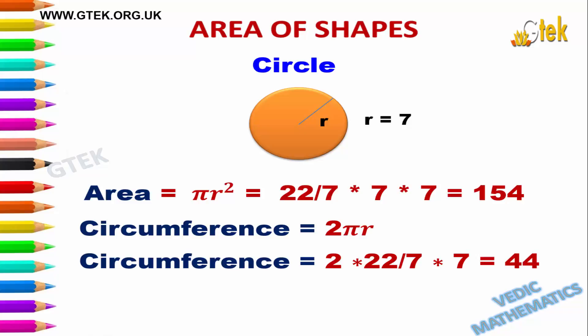The result equals 154. The circumference of the circle is calculated as 2 pi r. Again applying the value of pi, it is 2 into 22/7 into 7. The result is 44.